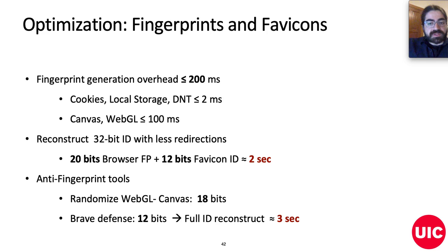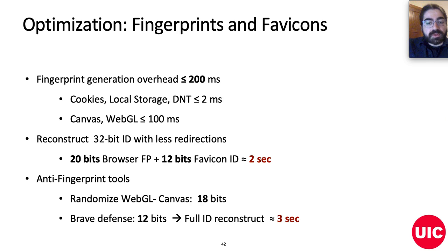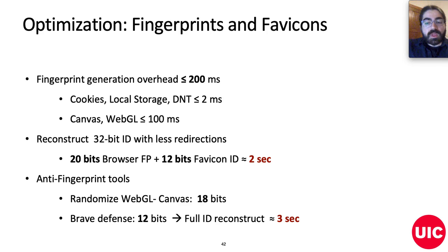To further evaluate this approach's practicality, we computed the time required to read and access each browser attribute. Since most features are directly available through JavaScript calls, we require less than 200 milliseconds to generate the browser fingerprint. Adding this overhead to the total baseline attack duration, we observed that we can reconstruct a full 32-bit identifier by combining the browser fingerprint's entropy and the favicon identifier in less than 2 seconds. Also, since users might deploy fingerprint defense tools and block some attributes, we computed the entropy gained by the remaining available features. Even if Canvas and WebGL defenses are considered really powerful, we have access to a sufficient number of attributes, and the attack is still practical and efficient, executing in approximately 3 seconds.